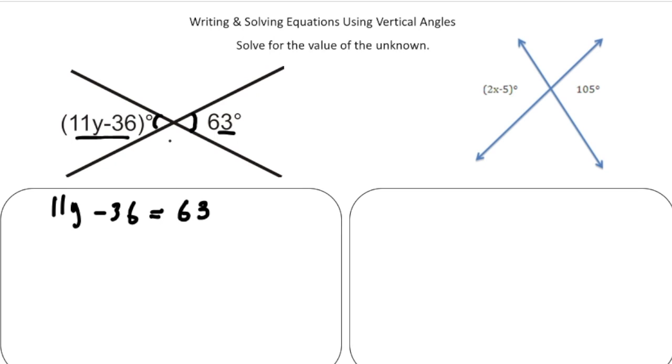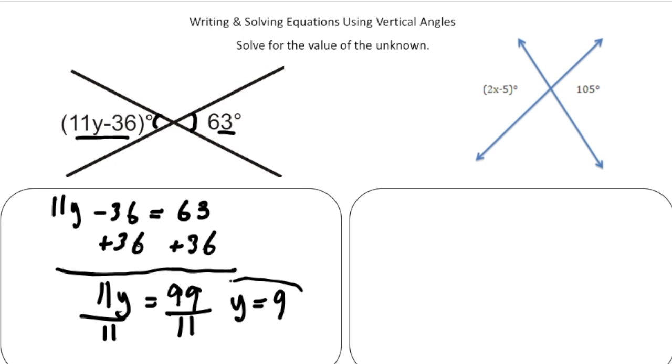Again, vertical angles are equal. So they don't add up to anything like supplementary angles or complementary angles. They're equal. So now when we solve for Y, I'm going to add 36 to both sides. So we get 11 times Y equals 99. Now when I solve for both sides by dividing by 11, 99 divided by 11 is 9. And there's our solution.